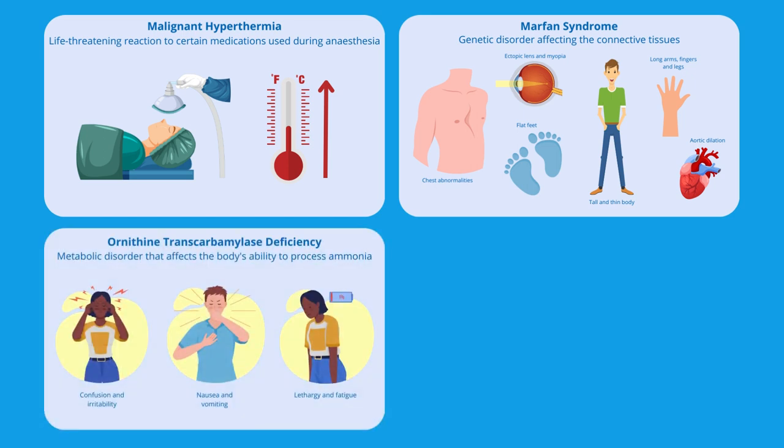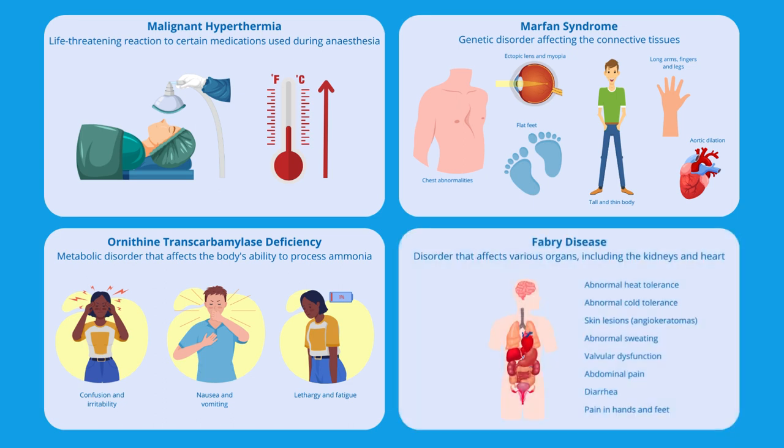Ornithine transcarbamylase deficiency, or OTC deficiency, which is a rare metabolic disorder that affects the body's ability to process ammonia — early identification is essential to prevent toxic ammonia buildup. Fabry disease, which is an inherited disorder that affects various organs, including the kidneys and heart — early diagnosis is crucial for managing complications and improving quality of life. And more.